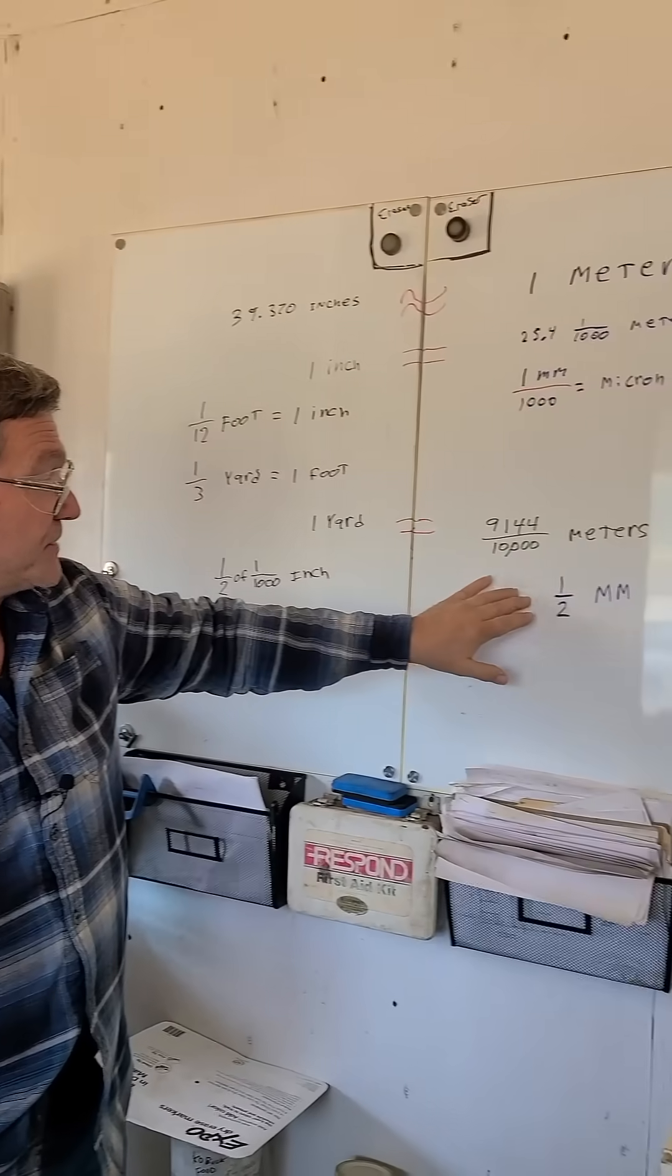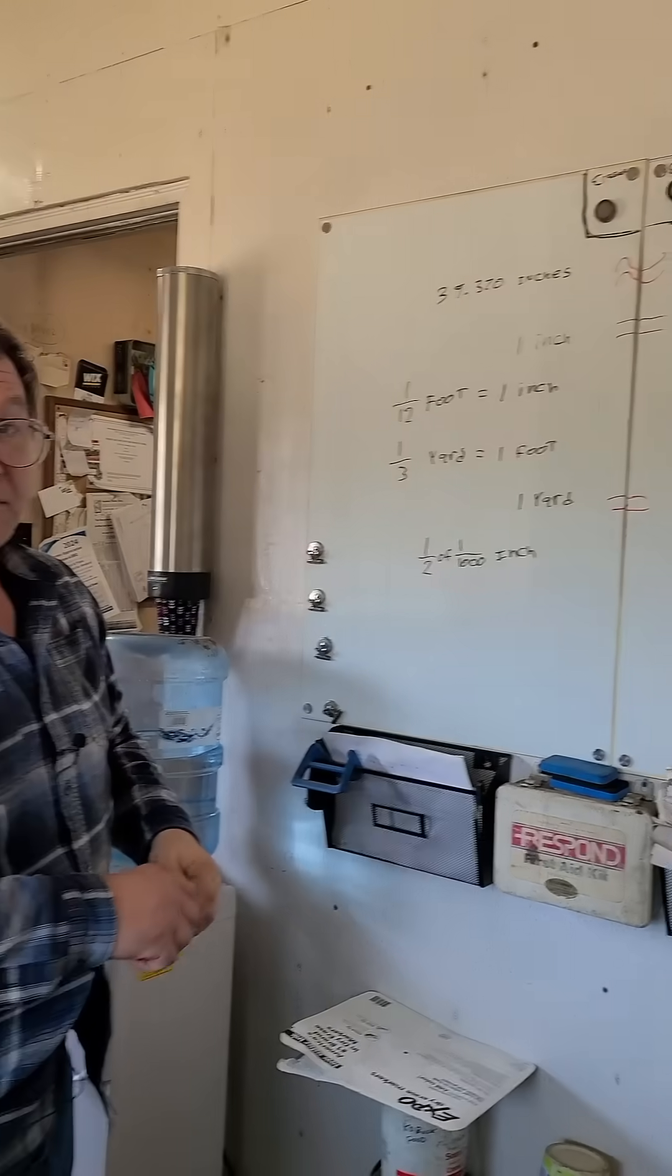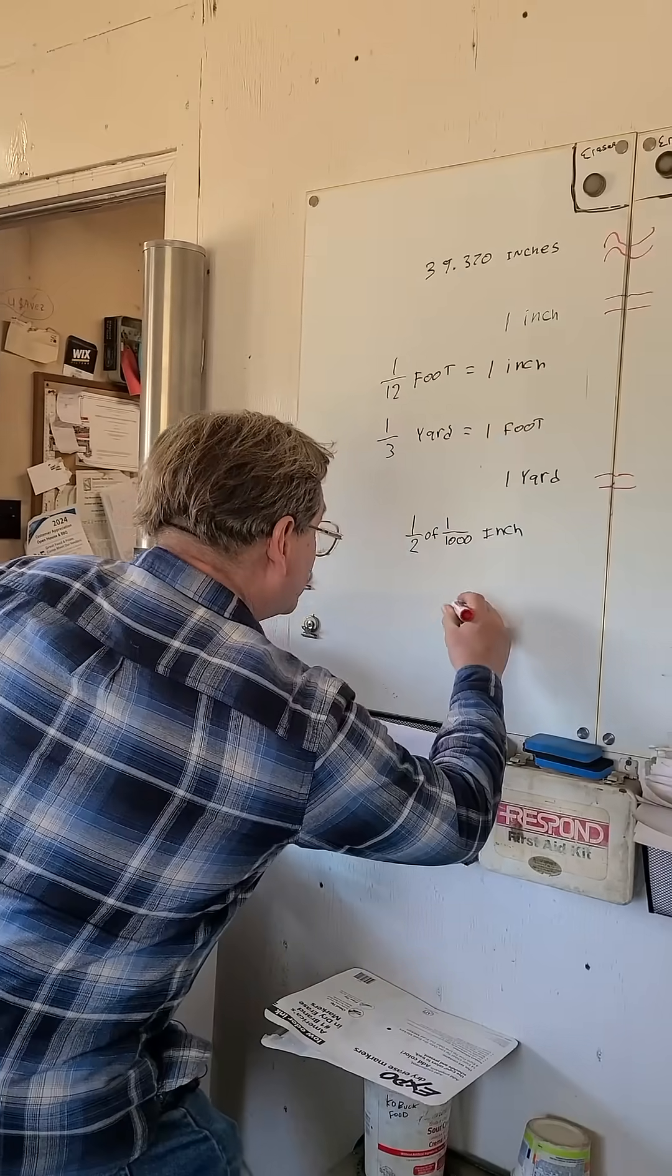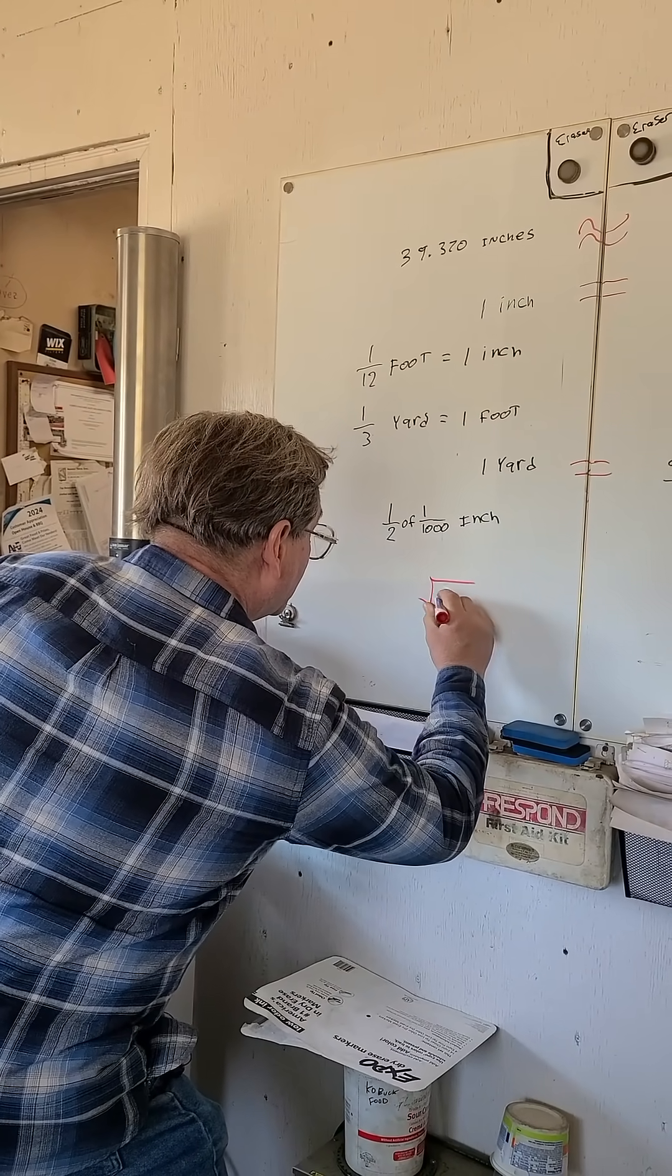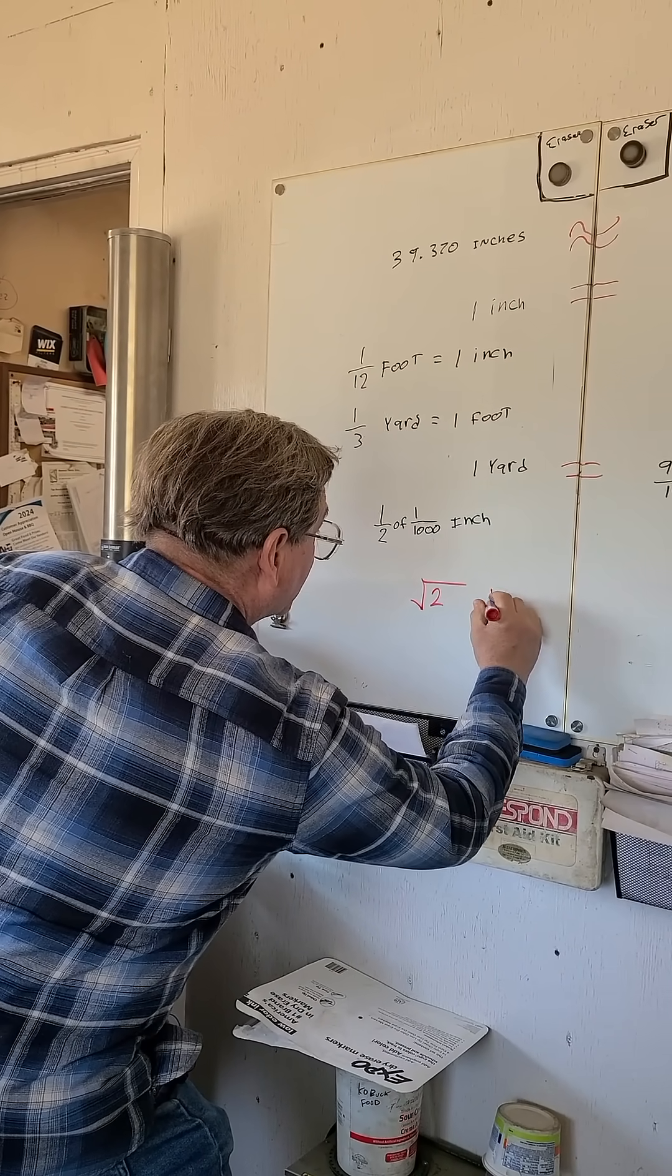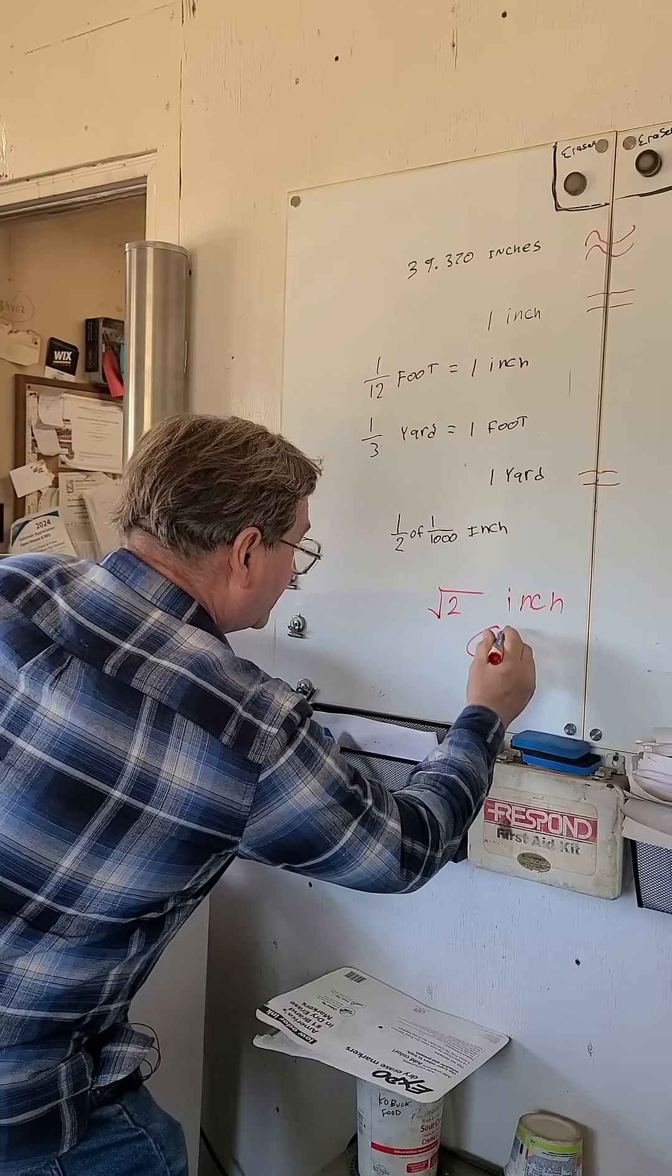You can rationally use a half a millimeter or a half of a thousandth of an inch. But now if we take square root of two and we have that of an inch, that's irrational.